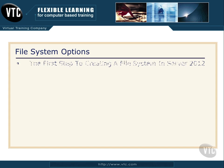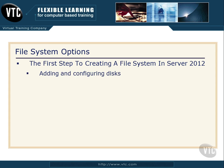So let's talk about exactly what has to happen here to get the file system options all set. Once you set up a Windows Server box, you need to add and configure disks that are going to be used for the purpose of sharing data out to the end users. So the first thing you need to do is choose the type of partition — is this going to be an MBR or a GPT? We're going to talk about MBR and GPT in a separate video.